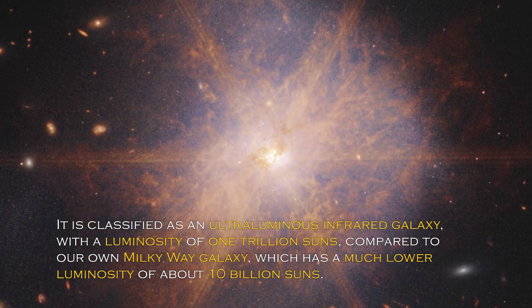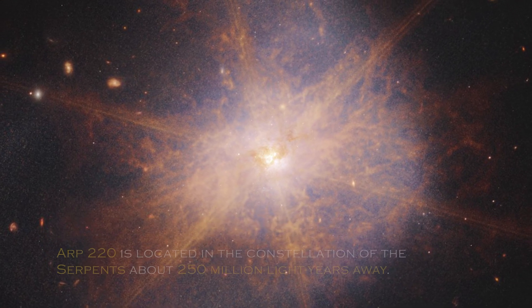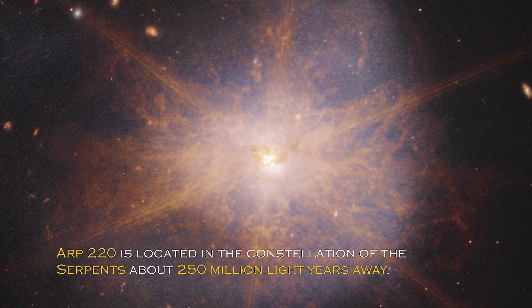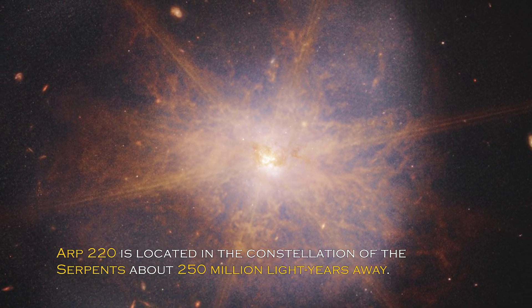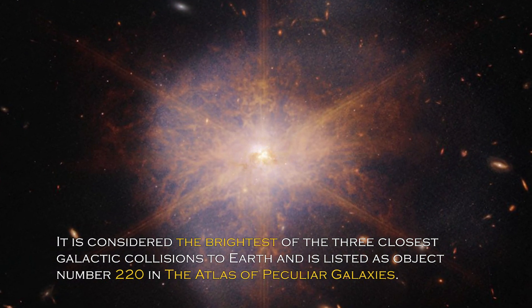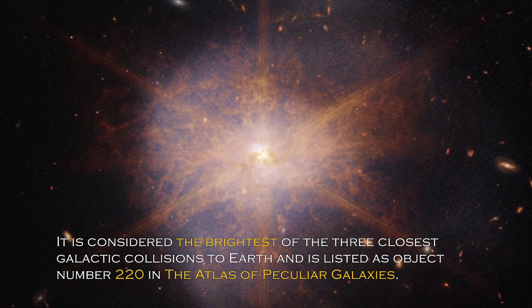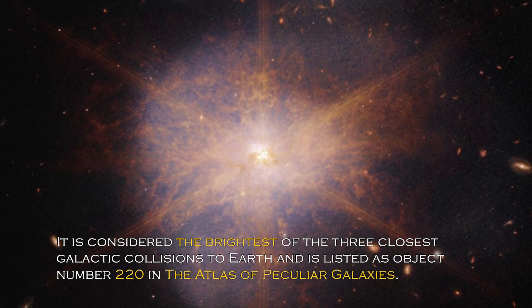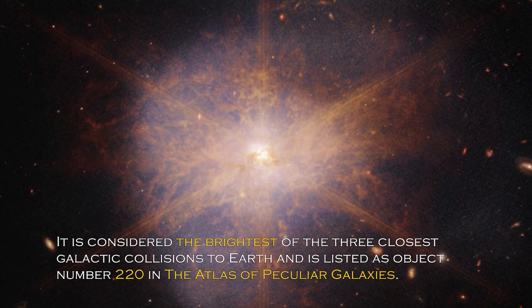ARP 220 is located in the constellation of the Serpents, about 250 million light-years away. It is considered the brightest of the three closest galactic collisions to Earth, and it is listed as object number 220 in the Atlas of Peculiar Galaxies.